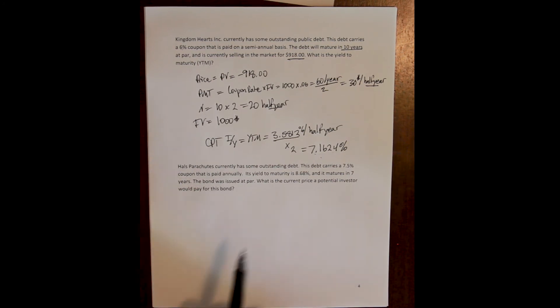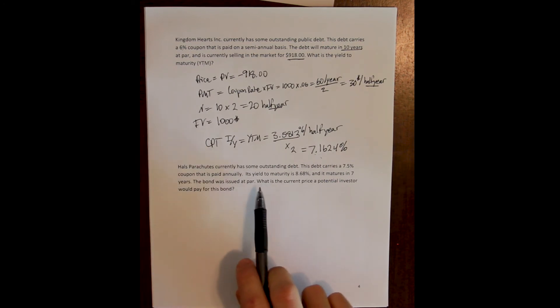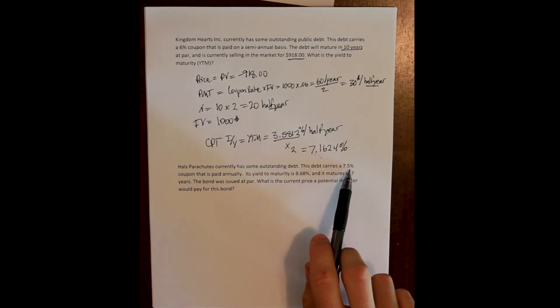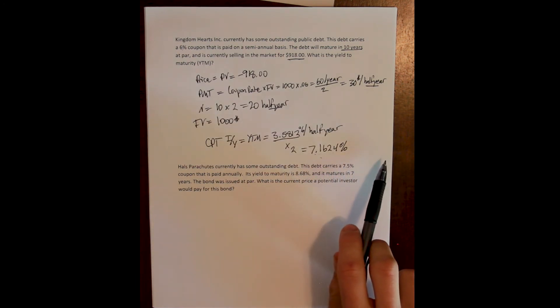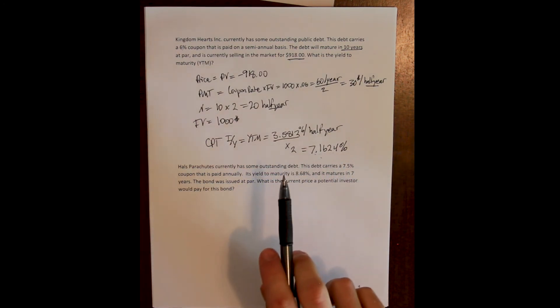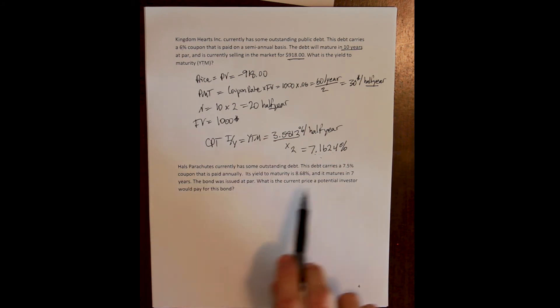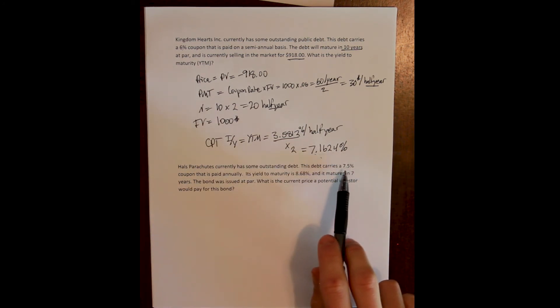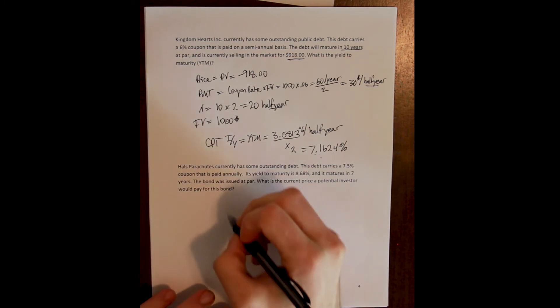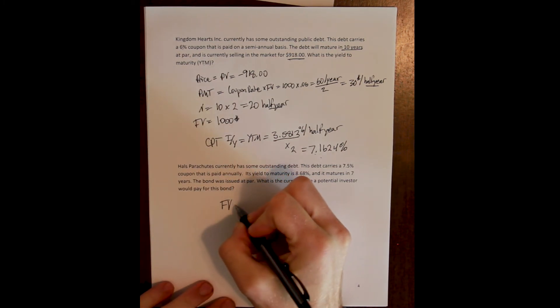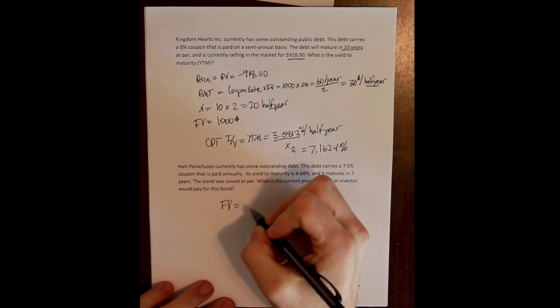Now, again, we know from our fundamental rule, right? So we have a guiding principle here that if the yield to maturity is greater than the coupon rate, that means rates have increased and that means prices must have decreased. So the current price a potential investor would pay for my 7.5% bond would be less than $1,000. This is going to be a discount bond. We know that. We can plug it in and see exactly what kind of discount we have.